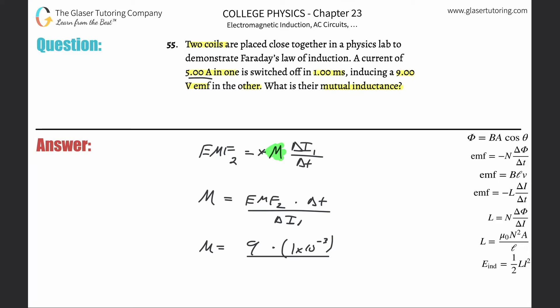It says five amps in one is switched off, so obviously it went from five to zero. So what's the change? Well, it's just five amps. Straightforward. Now take out that handy dandy calculator and let's plug in the value. So this is nine times 10 to the minus three, basically, then divided by five.